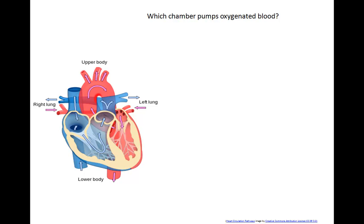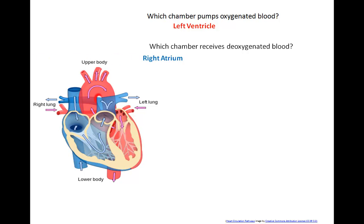Let's answer these questions. Which chamber pumps oxygenated blood? It is the left ventricle — ventricles always pump, and the left side of the heart always deals with oxygenated blood. Second question: which chamber receives deoxygenated blood? Chambers that receive are atria, and the right side of the heart deals with deoxygenated blood. So the answer is the right atrium.